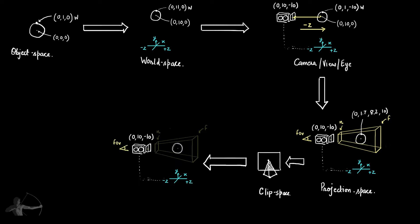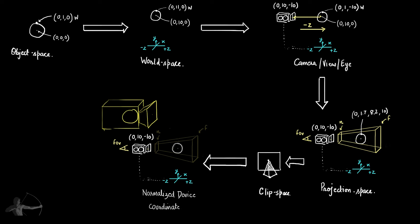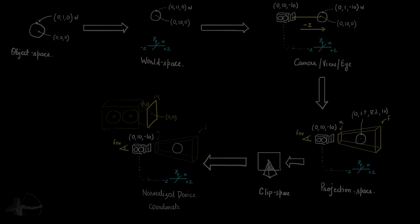Then comes normalized device coordinate (NDC). NDC is in regard to the frame of the camera, and its range is negative 1 to 1. The center of the NDC is 0, 0. If we lay it out flat, the center is at 0, 0, the top left corner, top right corner, bottom right corner, and bottom left corner each have specific NDC values at the corners of the frame.